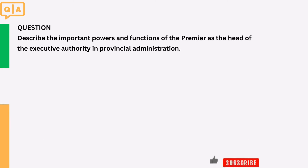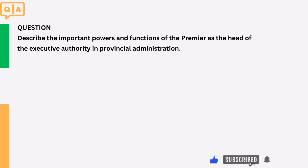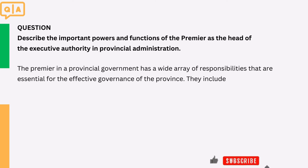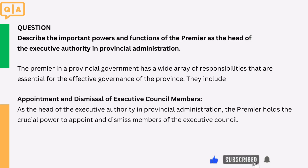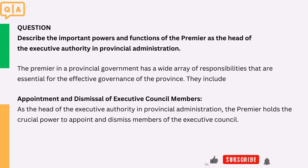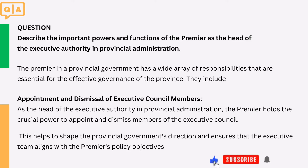Question: Describe the important powers and functions of the premier as the head of the executive authority in provincial administration. The premier in a provincial government has a wide array of responsibilities that are essential for the effective governance of the province. They include: 1. Appointment and dismissal of executive council members. As the head of the executive authority in provincial administration, the premier holds the crucial power to appoint and dismiss members of the executive council. This helps to shape the provincial government's direction and ensures that the executive team aligns with the premier's policy objectives.